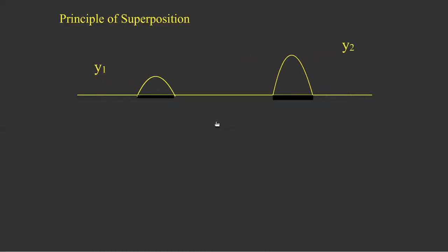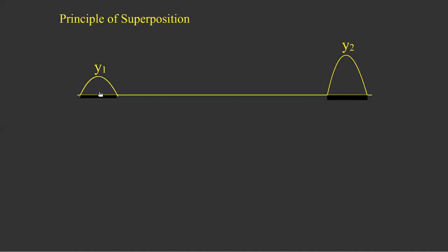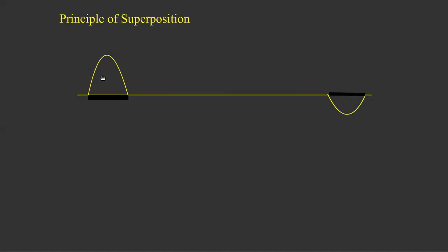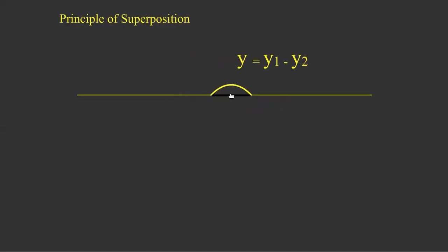Let me repeat this with specific values. If the amplitude of one crest is 4 cm and another crest is 2 cm, when they meet, the resultant is 6 cm — because one crest pulls the particle 4 cm and another pulls it 2 cm, giving 2 plus 4 equals 6 cm. For opposite superposition — a crest and trough — if the crest pulls 4 cm and the trough pulls 2 cm, then 4 minus 2 equals 2 cm resultant. So Y equals Y1 minus Y2. This is the principle of superposition.